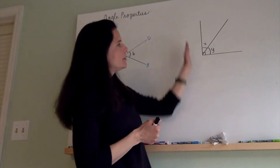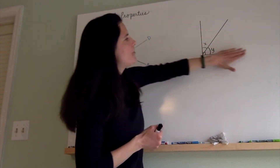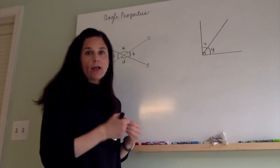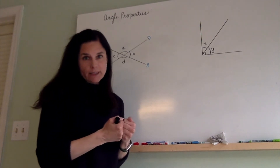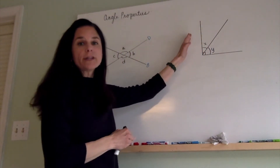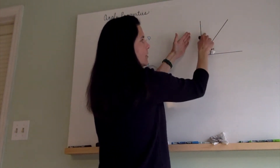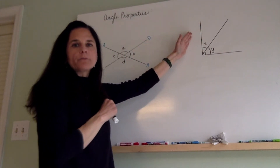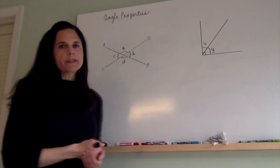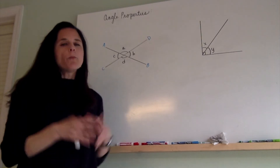Moving over to this figure, you'll see there are two angles and the overall angle has a little square in the corner, which means it is a right angle equal to 90 degrees. The fourth angle property states that the sum of the angles within a right angle are equal to 90 degrees. So if this whole angle is 90 degrees, the two smaller angles inside would sum to 90 degrees. It's important to remember these angle properties and practice using them to find unknown angles before we move on.